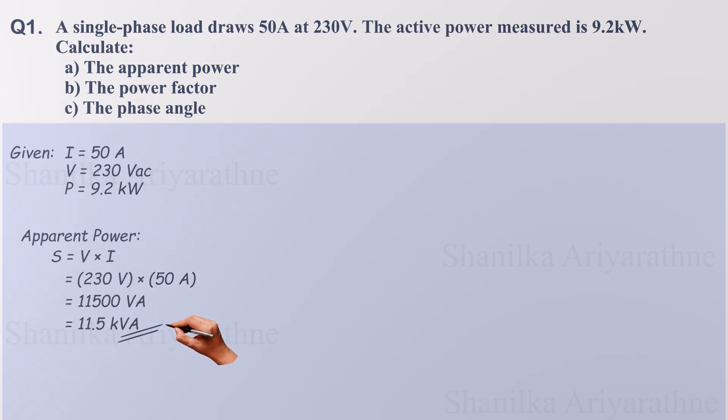This reveals something interesting. While our load consumes 9.2 kilowatts of active power, it actually draws 11.5 kVA from the supply. What causes this difference? This brings us to our next calculation.